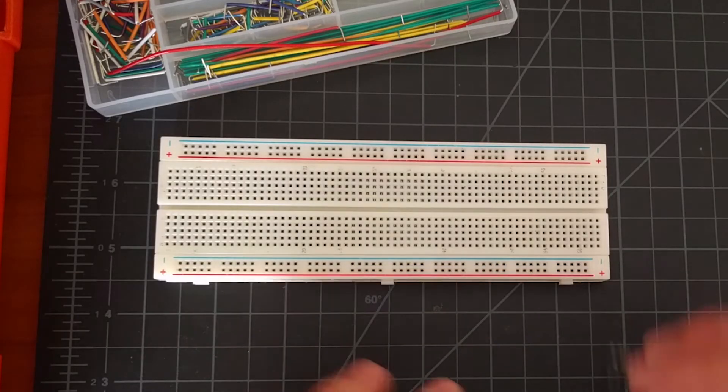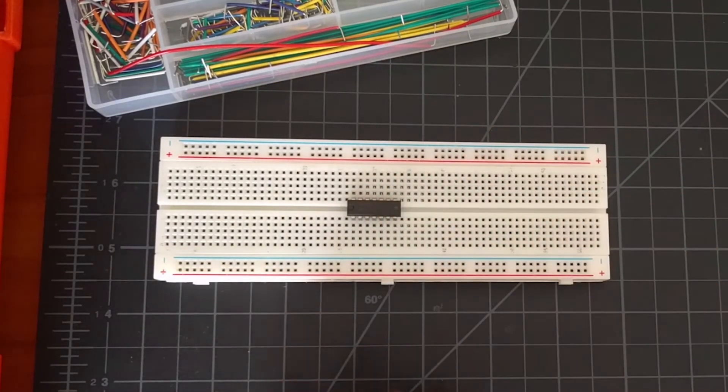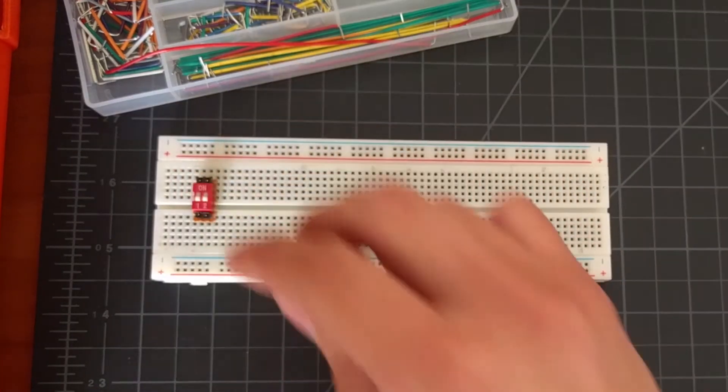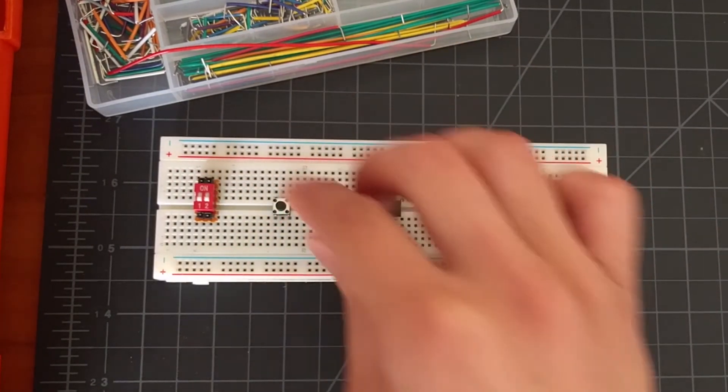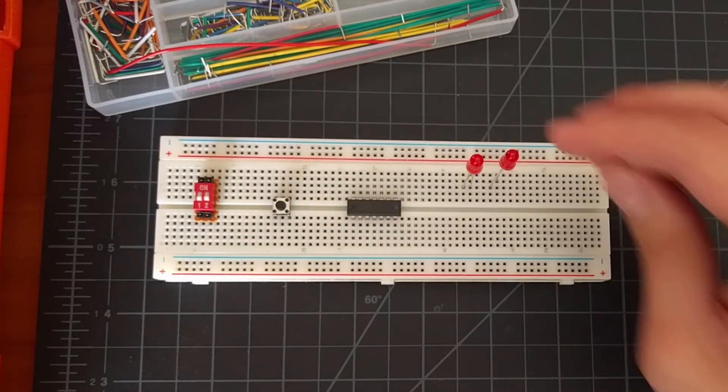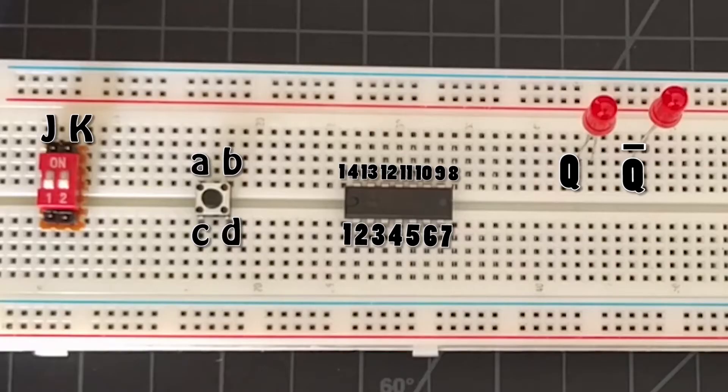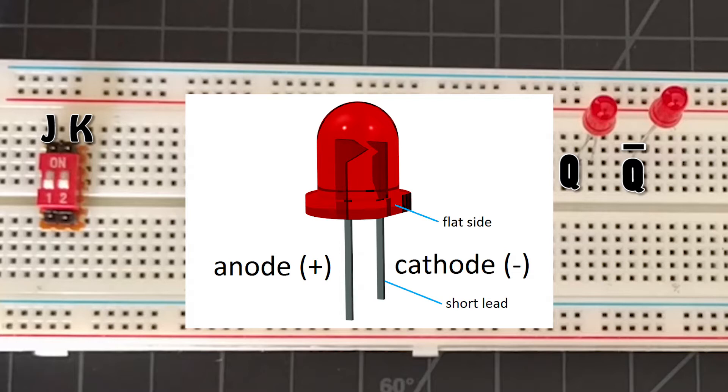Let's start with the connections. We'll start by placing the chip, the dip switch, the push-button switch, and the 2 LEDs onto the breadboard. I'll refer to the pins of the components as shown. Note that Q and Q-bar refers to the anodes of the LEDs.